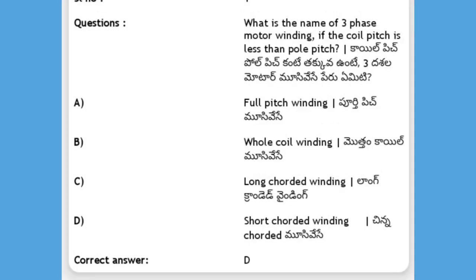What is the name of a three-phase motor winding if the coil pitch is less than the pole pitch? Options: full pitch winding, whole coil winding, chorded winding, short chorded winding. The answer is D, short chorded winding.